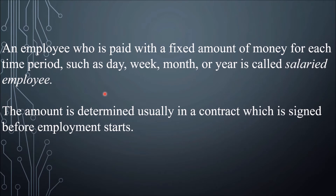The difference between salary and wage: when we say wage, it's the amount paid by the hour to the employee; when we say salary, it's a fixed amount received by the employee for each time period such as a day, week, month, or year. The amount is determined in a contract signed before employment starts, so you will know your salary before employment begins.